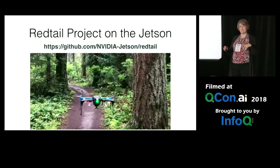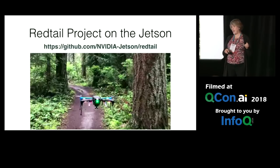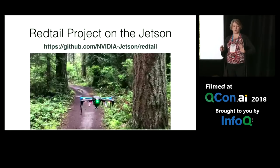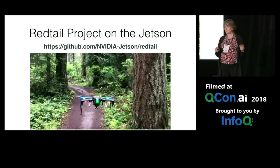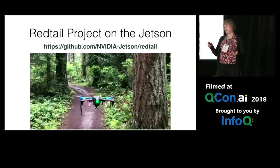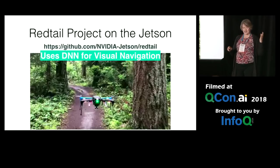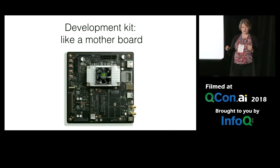Here's an example. NVIDIA has a project you can actually implement yourself online with a quadcopter that uses inference by training a neural network and downloading it into the Jetson. The neural network will determine where a path is. The path wouldn't have to be a woodland path — this one was trained that way — but you could use it for pipelines, sidewalks, or all kinds of things that use inference in real time to follow a path. A deep neural network is what you would use for visual navigation.